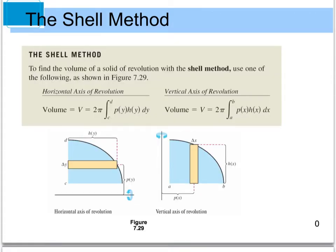Just like with the disk method, we have to pay attention to which axis we're using as an axis of revolution. If we're using the horizontal axis of revolution, our volume is still 2π times an integral, but we integrate from c to d with p and h in terms of y, multiplied by dy. For a vertical axis of revolution, our volume is 2π times the integral from a to b of p(x) times h(x), dx.